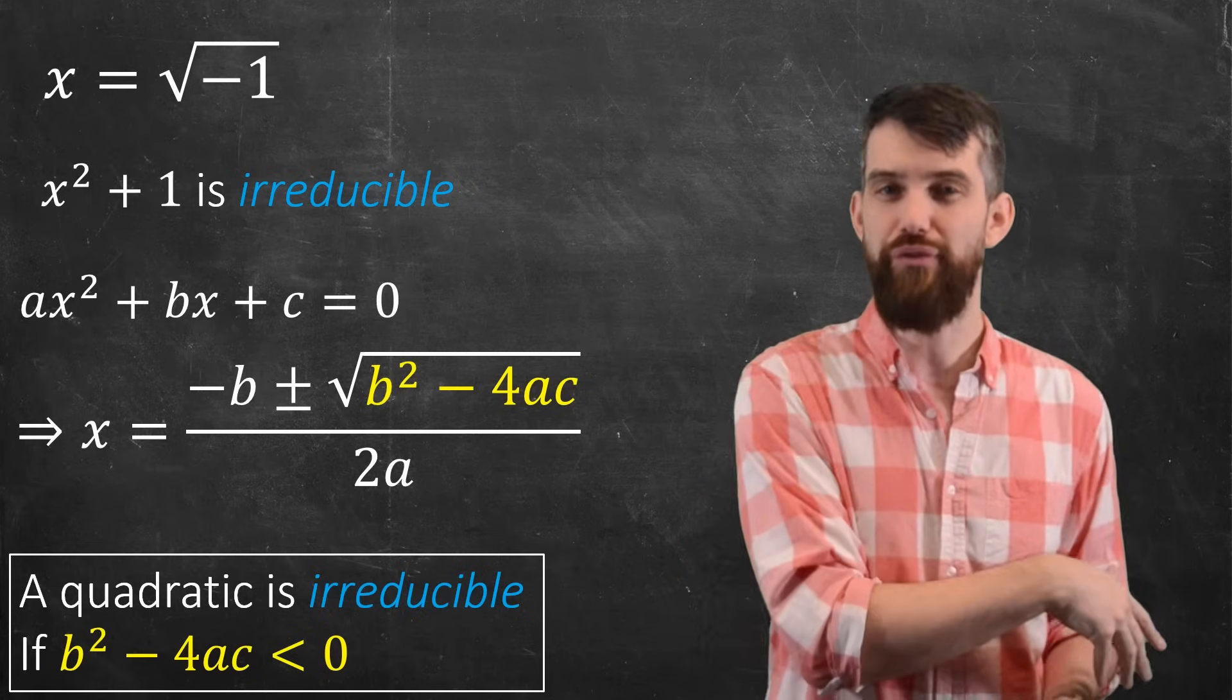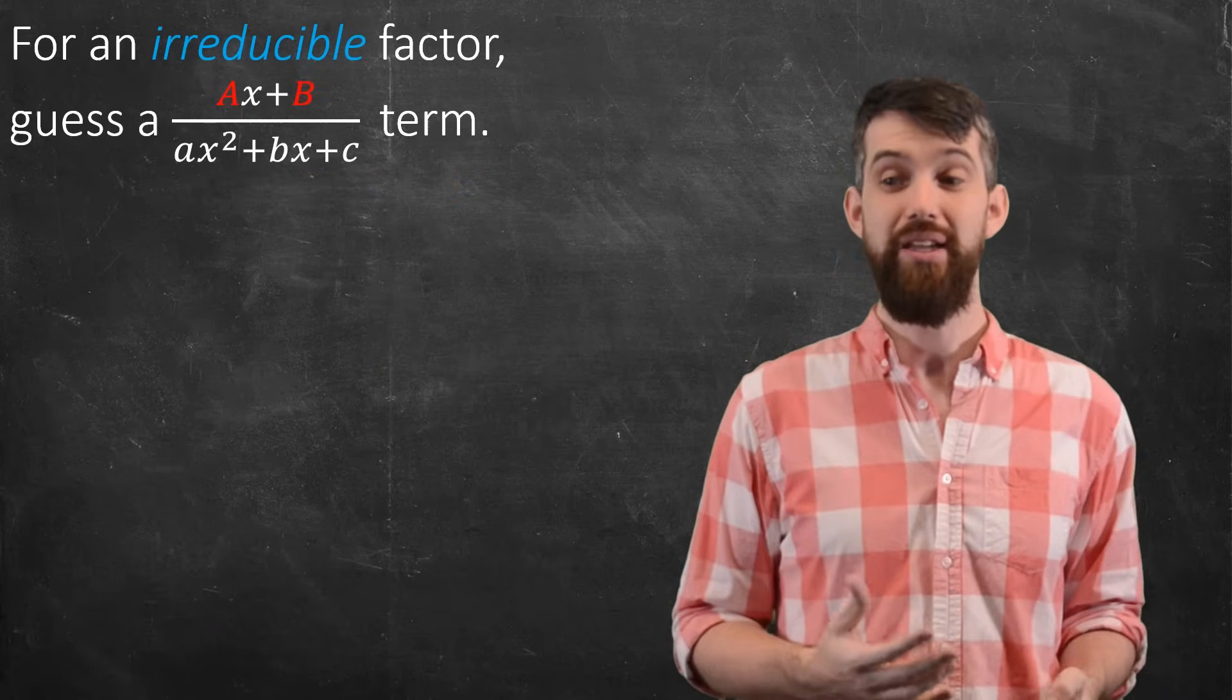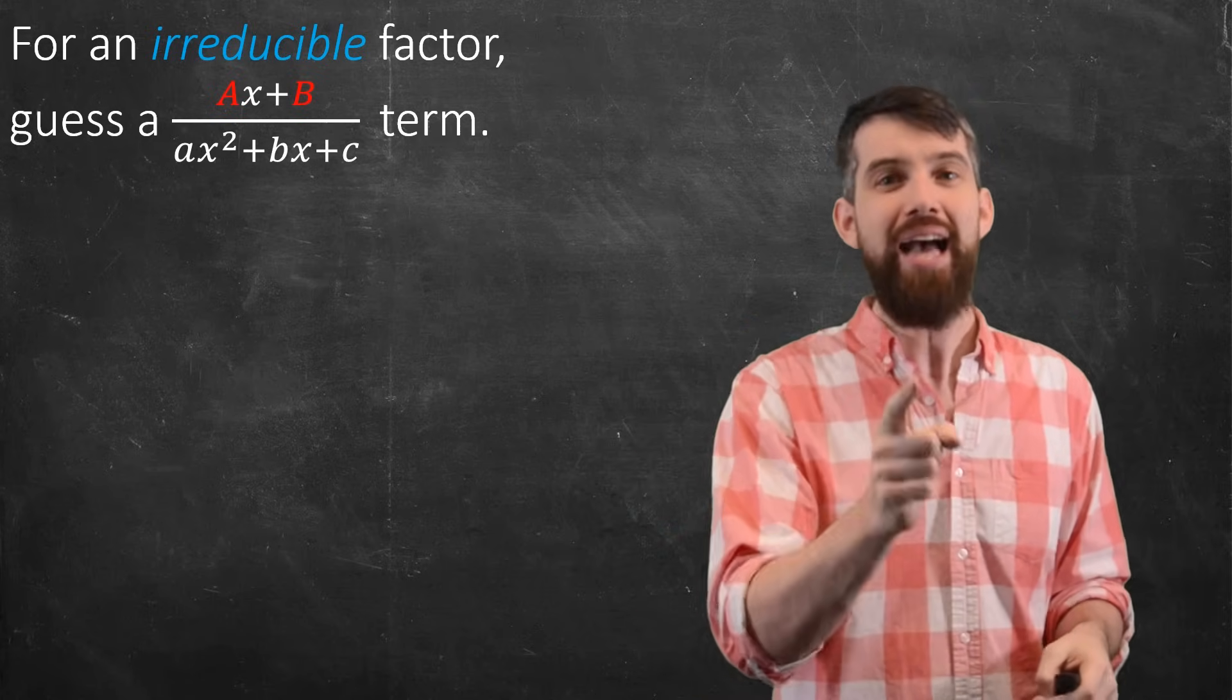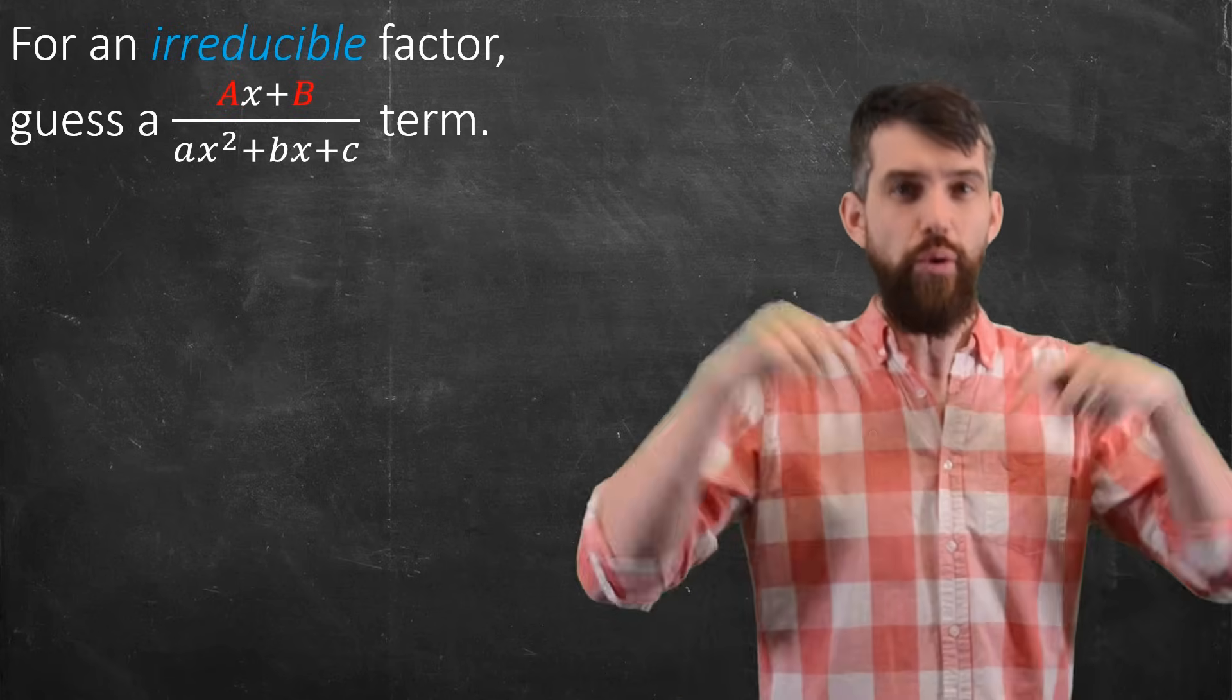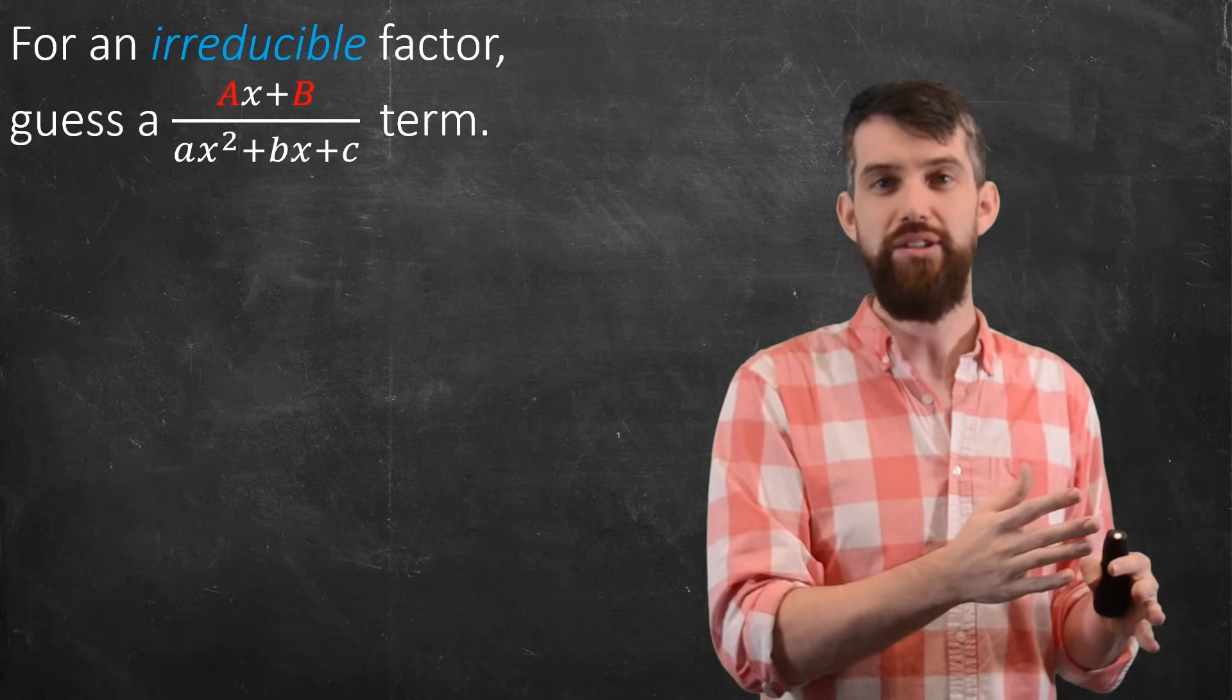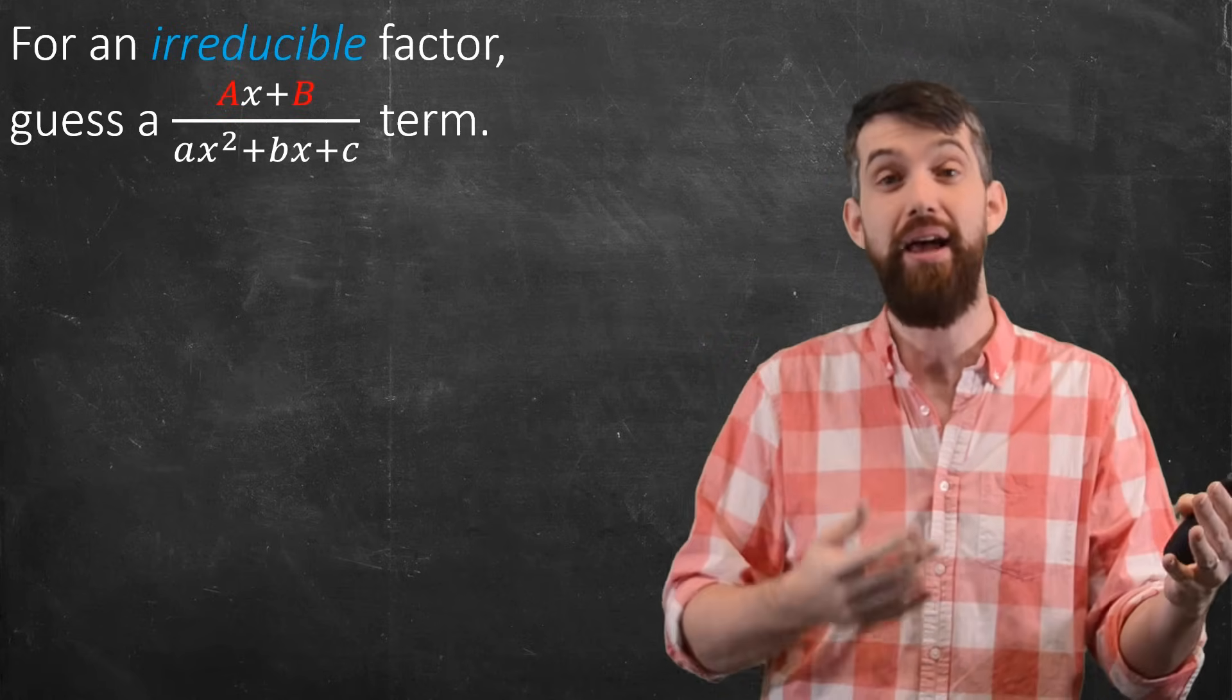Now I'm trying to do partial fractions. I've got one of these quadratic factors on the base. What can I do? If I have an irreducible factor, some quadratic that I cannot reduce into linear terms, then the thing I guess in my partial fraction decomposition is you put the quadratic on the bottom, but now you put a generic linear on the top, not a generic constant. That is, I guess an ax plus b, and I have to find both the a and the b.